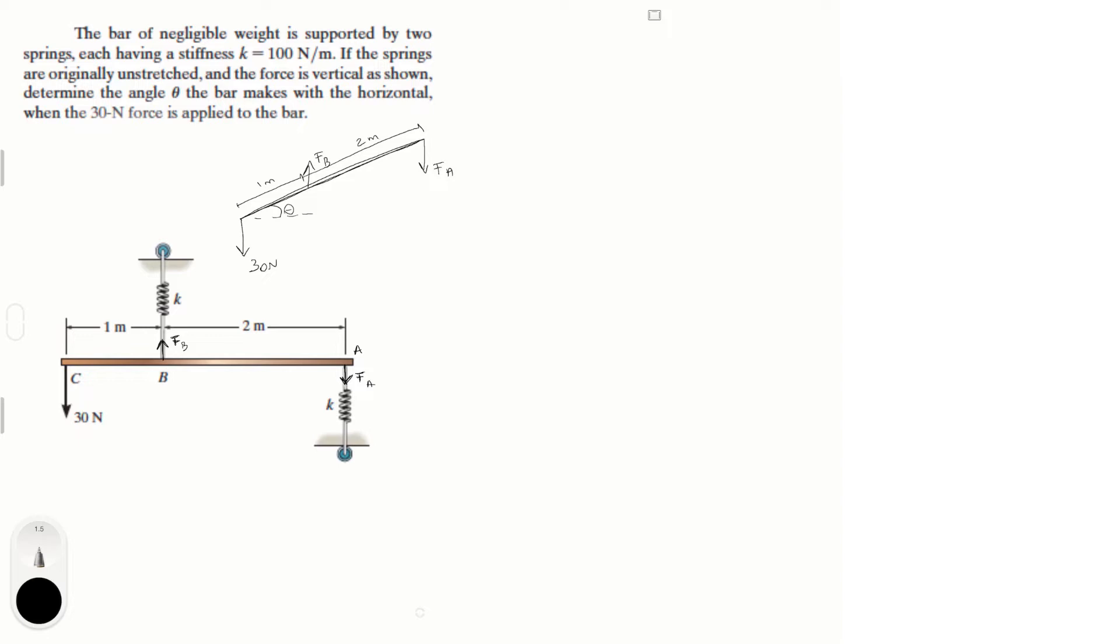Now look at the variables that we're trying to find. We have F_A, F_B, and theta. So I'm going to do the moments around point A just to find F_B. You could also do the moments at F_B to find F_A and then find F_B. That would be right too, but I'm just going to pick this one.